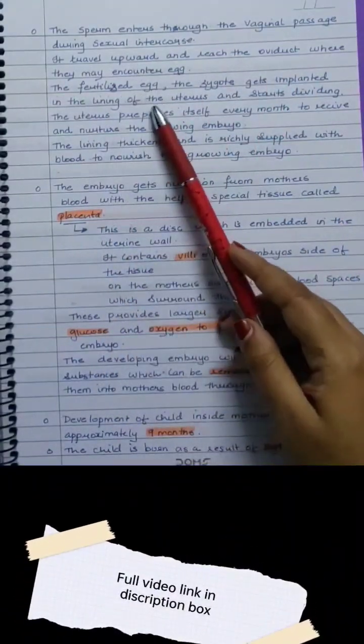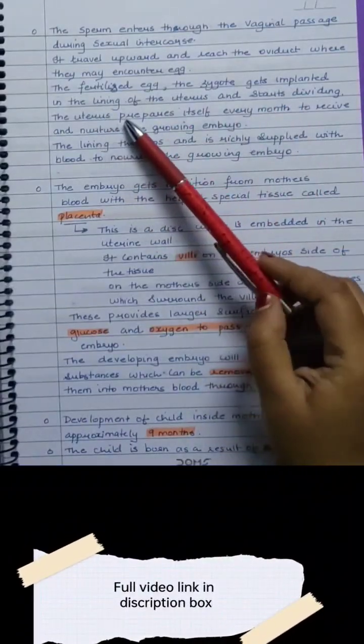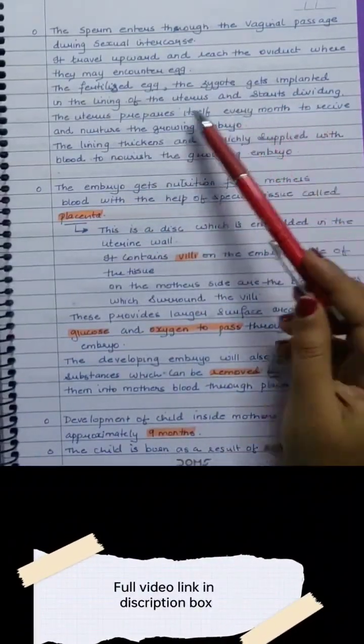The fertilized egg, the zygote, gets implanted in the lining of the uterus and starts dividing.